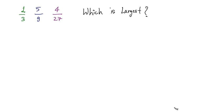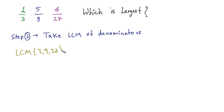Let me write the first step which tells us to take the LCM of denominators. So the denominators are 3, 9 and 27. LCM of 3, 9 and 27 turns out to be 27 because 27 is divisible by both 3 and 9.